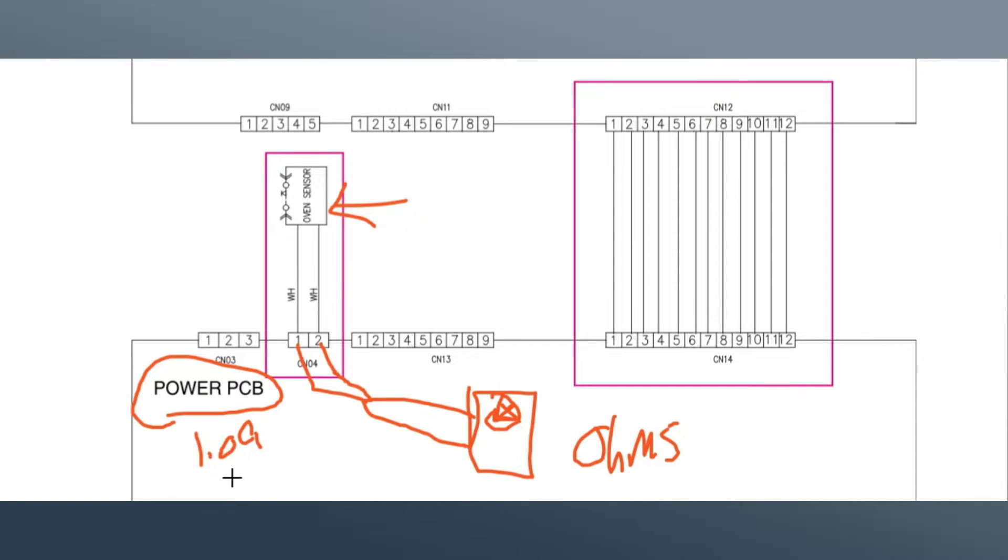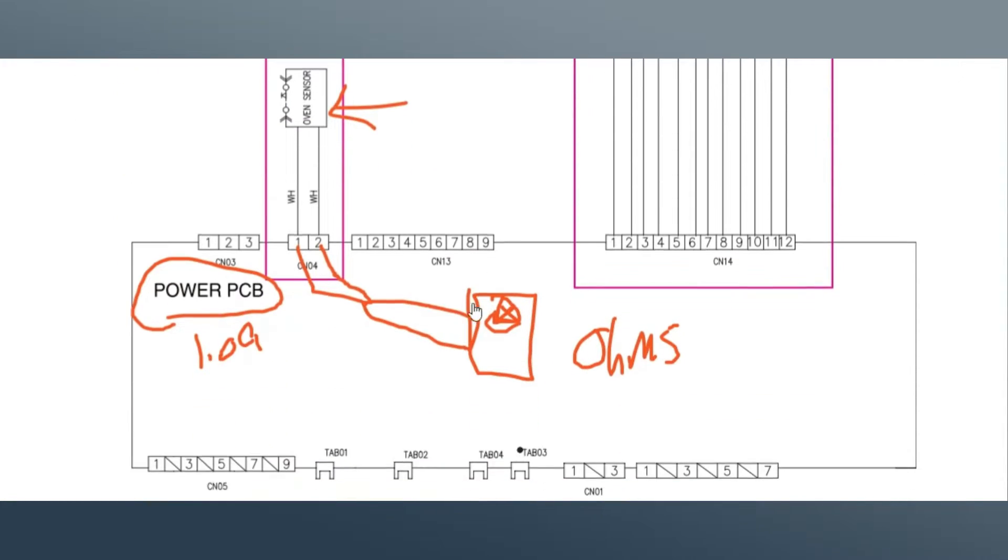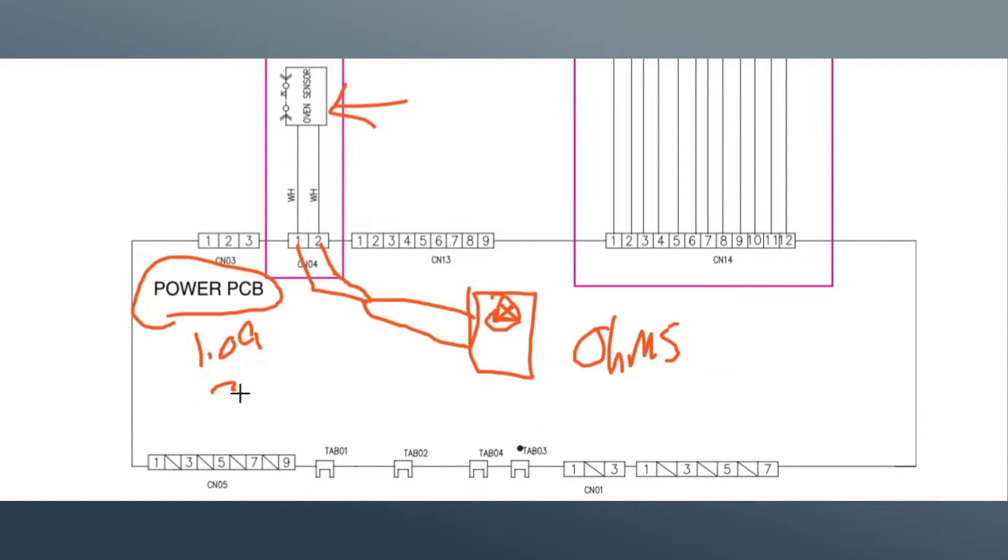Say if we read, it says here 1.12. Say if we read like 3.09, this is way off, very off. So that means we would have a bad sensor. Vice versa, if we read 30 ohms without the k, just 30 ohms, that would be a bad sensor. So we replace it.